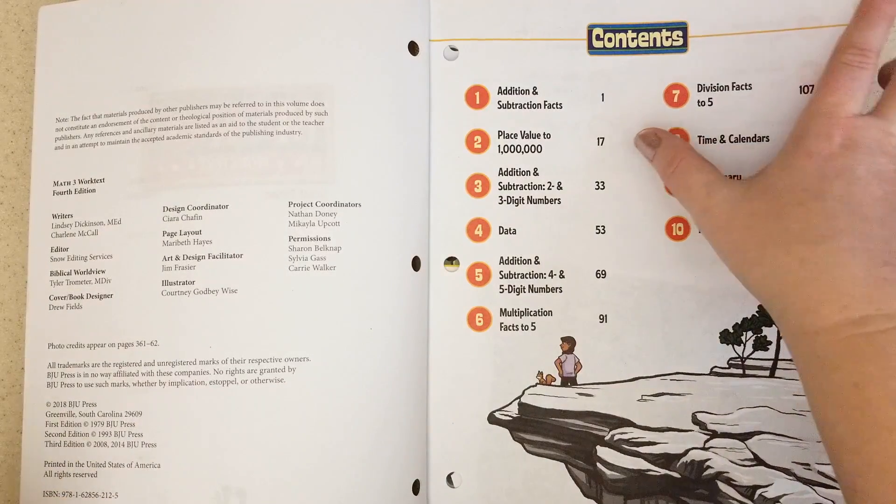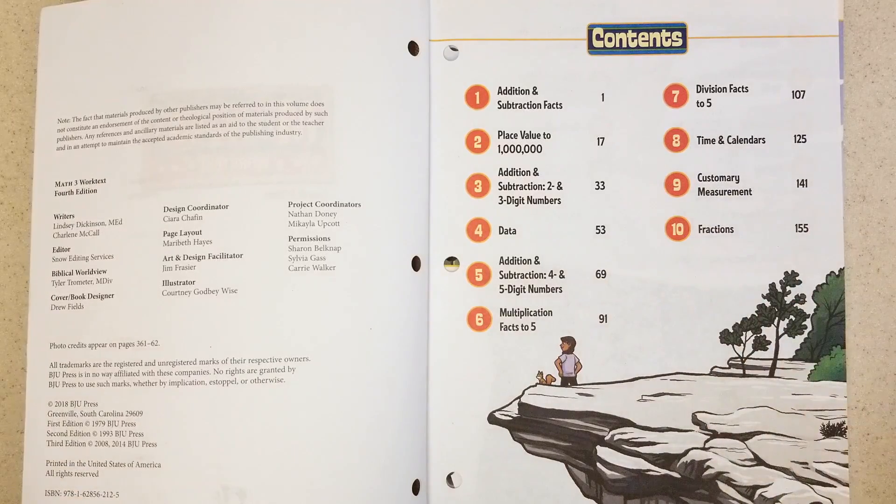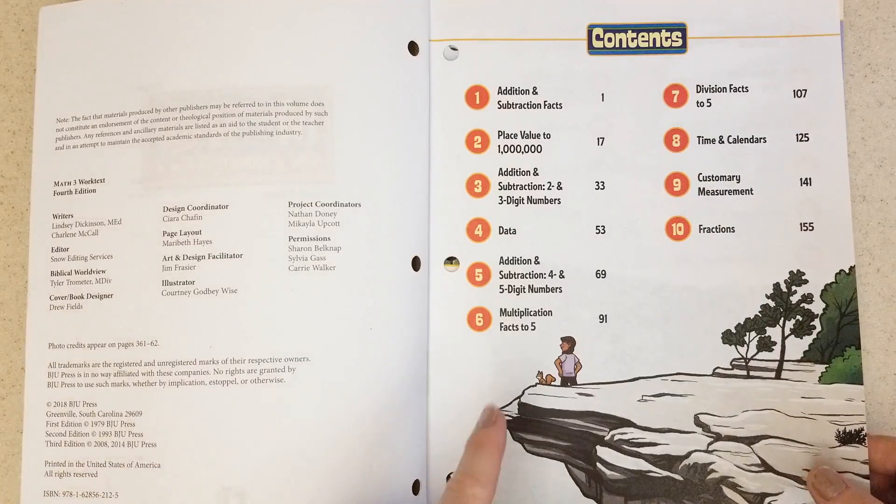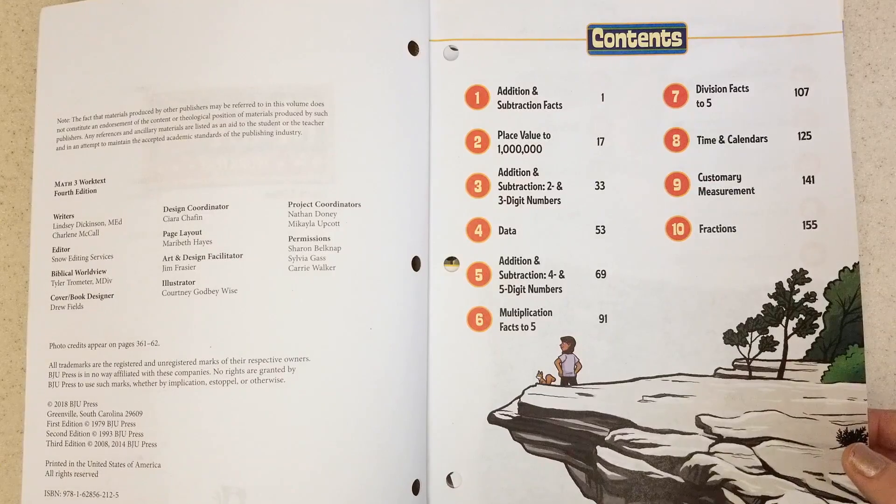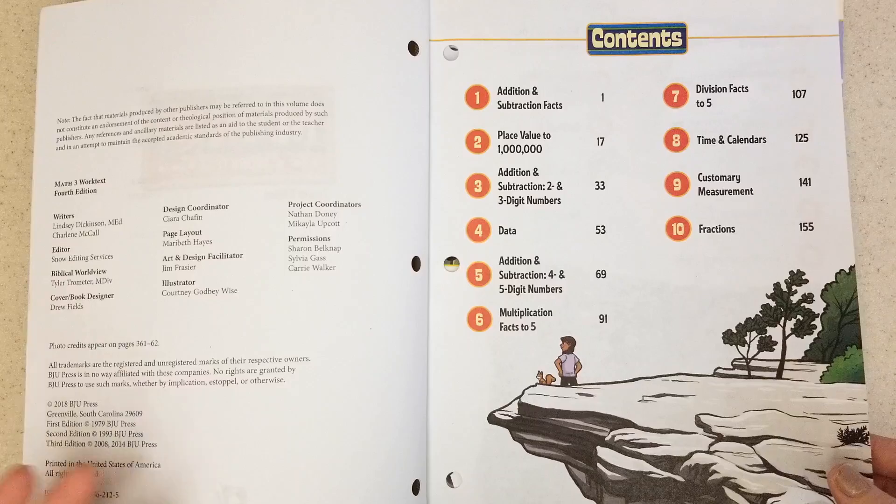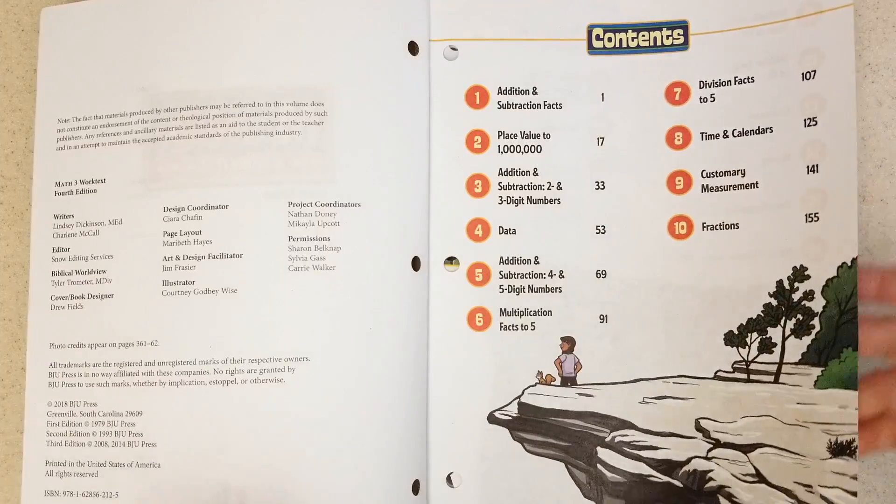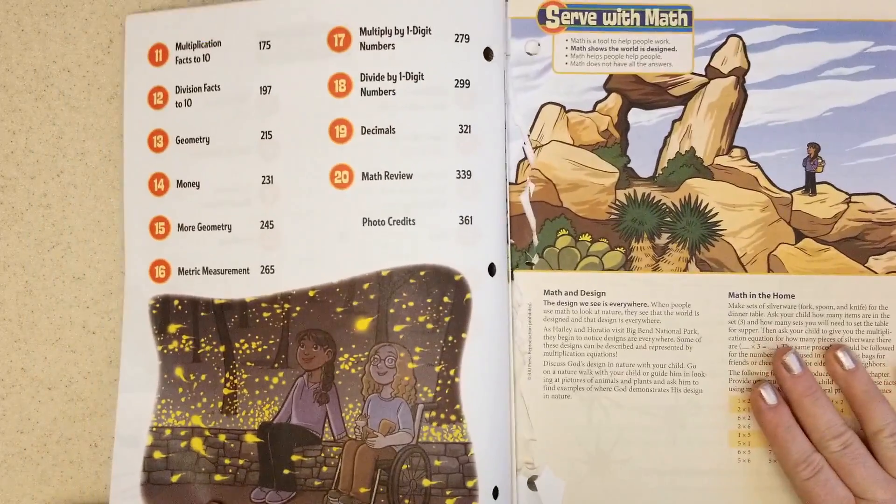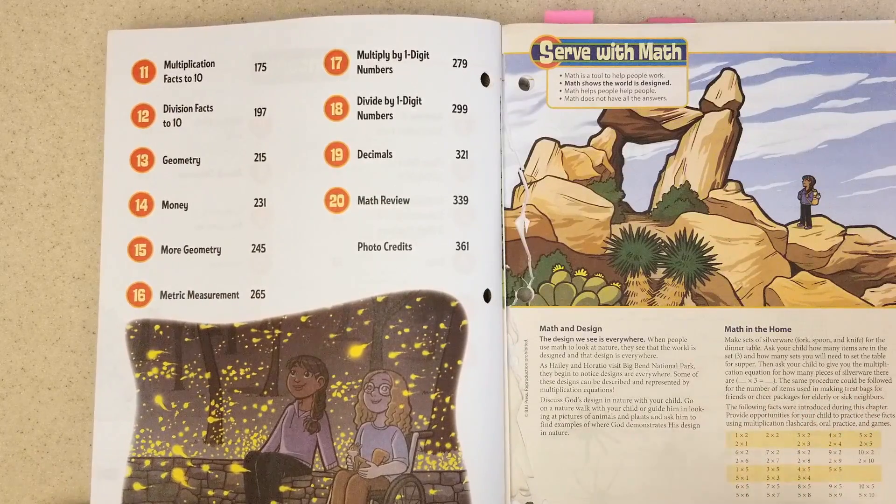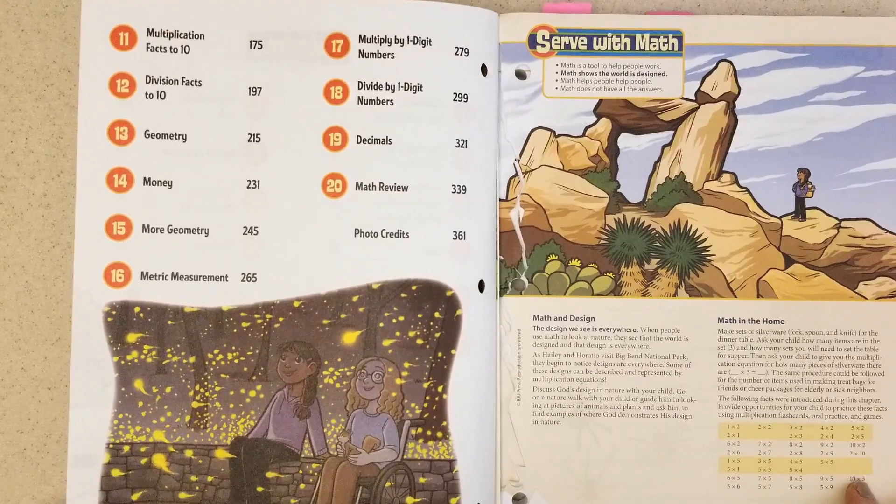They were talking about place values to one million, addition, subtraction with two to three digits, then data which was really fun with bar graphs and line graphs. Chapter five covers addition and subtraction with four and five digit numbers, rounding to the nearest one thousand, multiplication facts to five, division facts, calendar, measurements, fractions. Then they're going to be doing multiplication facts to ten, division facts to ten, geometry, money, metric measurement, multiply and divide by one digit numbers, decimals, and math review.